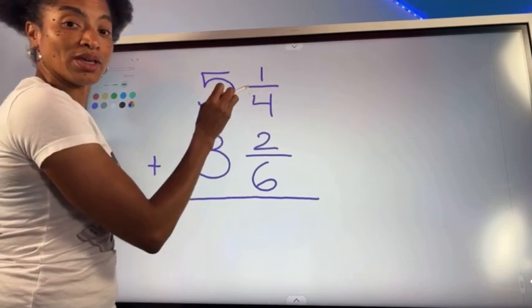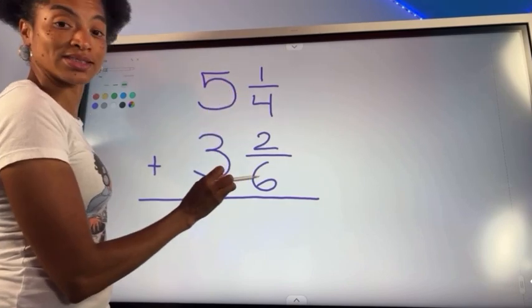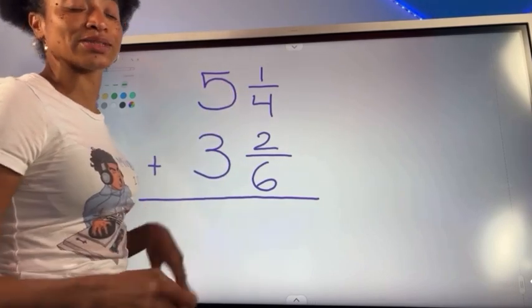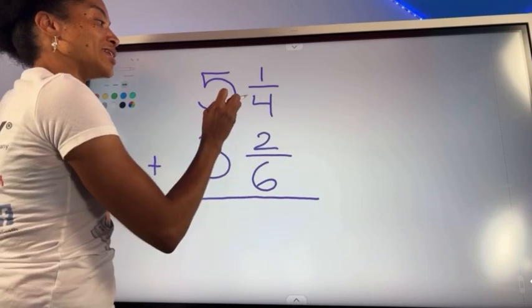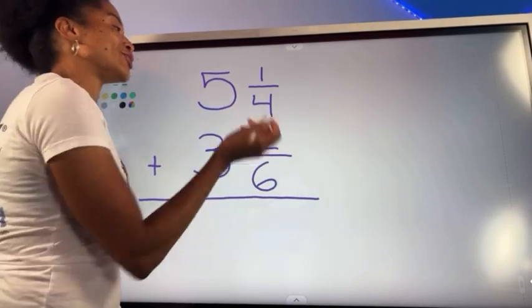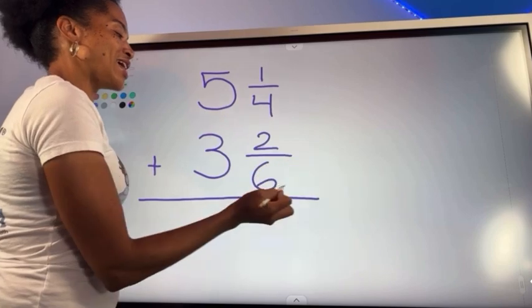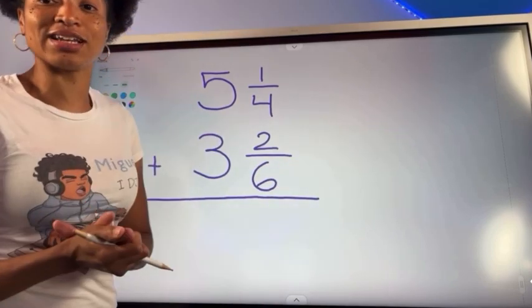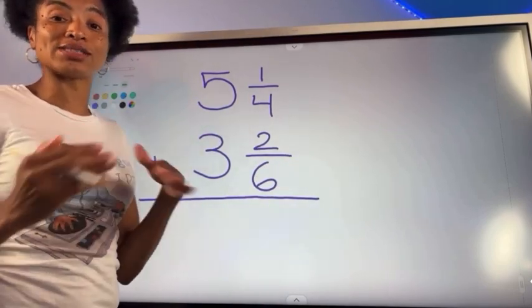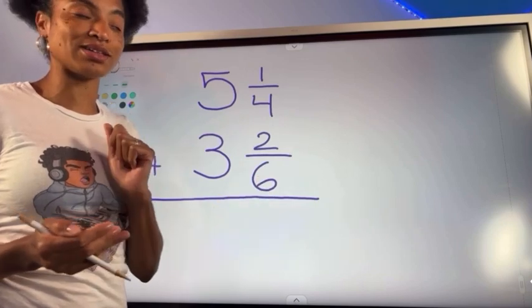So here the denominators would be 4 and 6. So listening to the lyrics, anytime my denominator is different, are they the same or different? They are definitely different. This one's a 4, this one's a 6. Next in the lyrics it says I'm looking for that LCM until I get it.